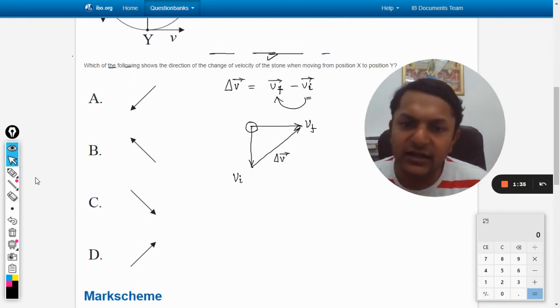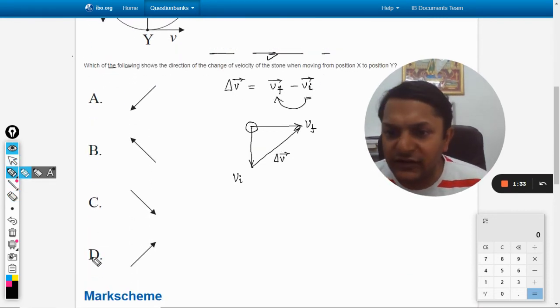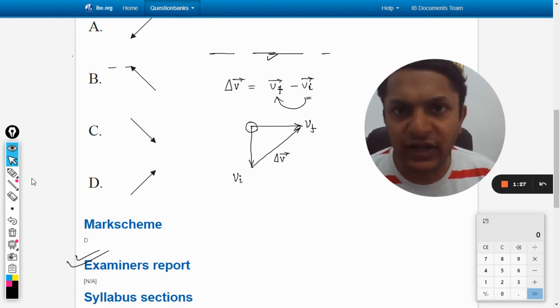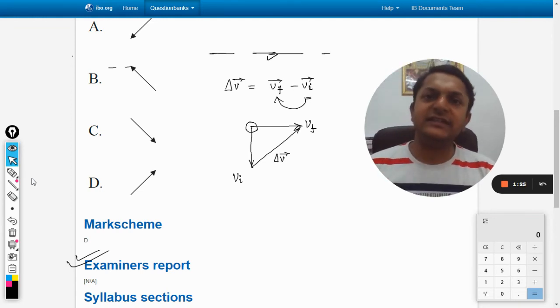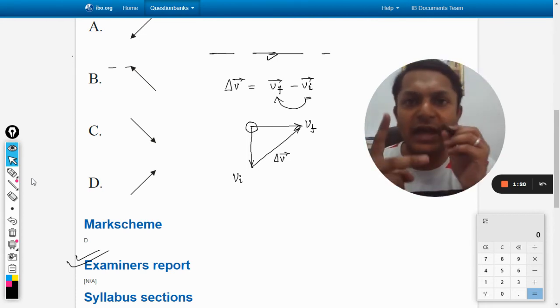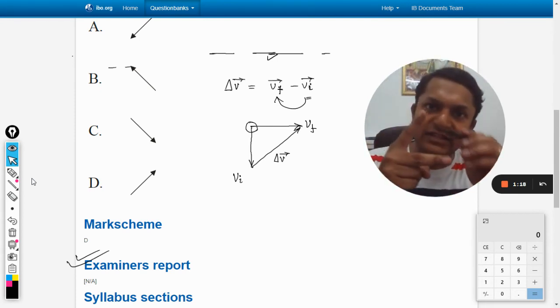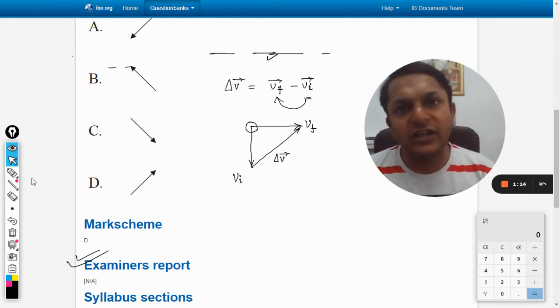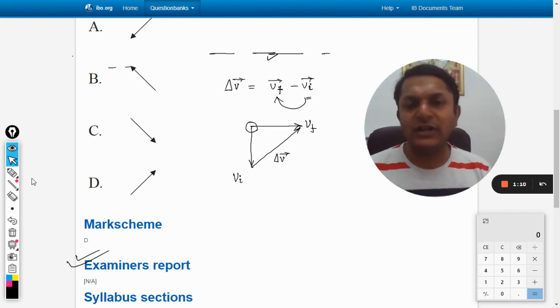A, B, C, D. Out of the following, the answer should be D. And let's verify it from the mark scheme. And yes, the answer is D, we are absolutely correct. So this is the graphical method of subtraction by joining the two vectors at tails. We connect the diagonal or the third side of the triangle, which will give you the subtraction. If you have any problem with this, please let me know in the comment section. All the best, bye.